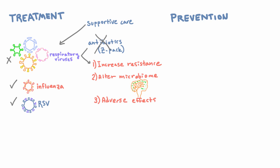So how can we do that? There are two main ways. Number one is to stop actual transmission of the viral particles. And number two, of course, is vaccines, which we have for some of these viruses.